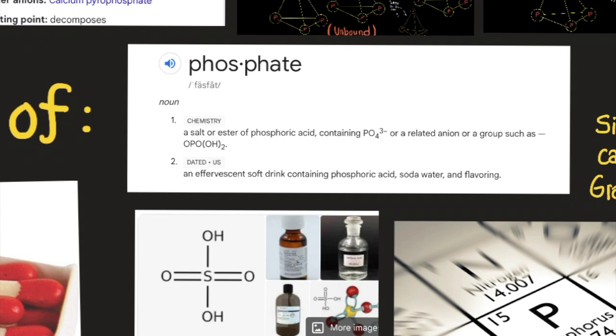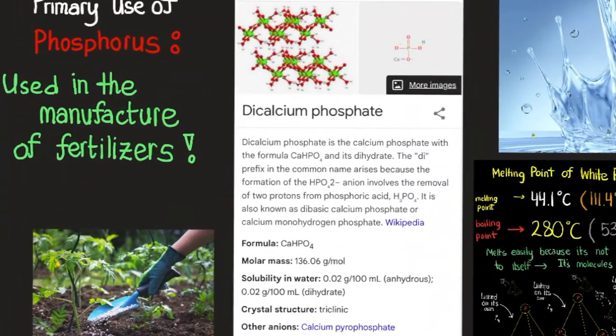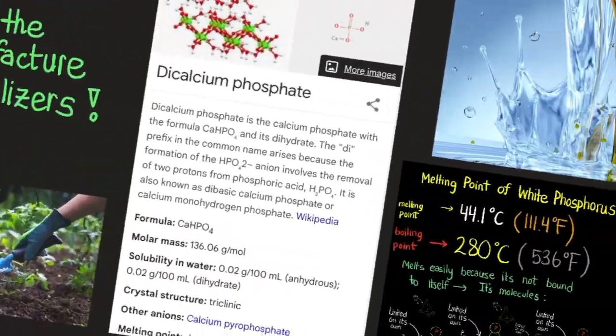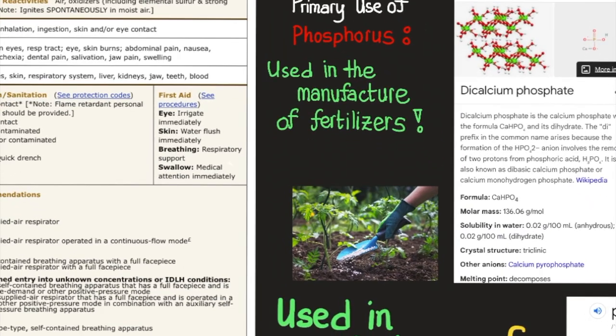Toothpaste has sodium fluoride, and the chemical reaction between sodium fluoride and the apatite in your teeth allows fluorine to return to your teeth and prevent them from decaying from the phosphates in soda. Talking about calcium hydride — here is the molecule dicalcium phosphate. Dicalcium phosphate is calcium hydride combined with phosphorus to form a net molecule of dicalcium phosphate — with the formula CaHPO4. The primary use of phosphorus is in the manufacture of fertilizers.